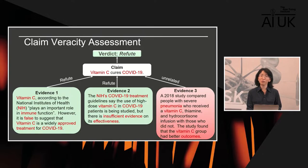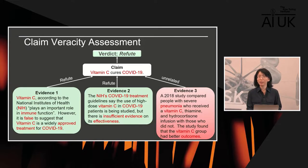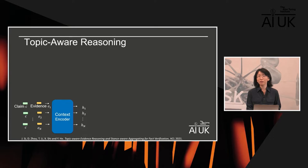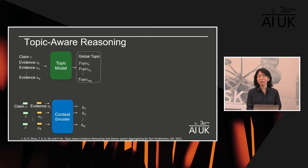Apart from identifying the evidence-claim relationship, we identify major topics discussed in the claim and evidence, highlighted by topic words in red. We want to maintain topic coherence between evidence and claim, and ideally topical coherence across different pieces of evidence. Evidence one and two are topically more relevant to the claim compared to evidence three. We propose a topic-aware reasoning approach, comparing the claim with each piece of evidence through a context encoder generating hidden representations.